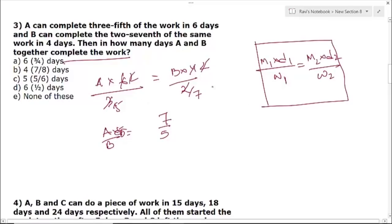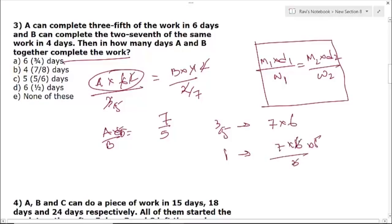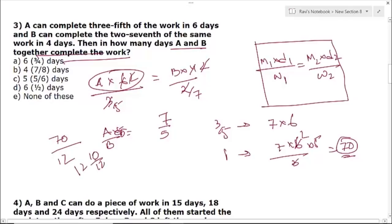Now, A can complete 3/5 of the work in 6 days. Using efficiency of A = 7, total work = 7 × 6 ÷ (3/5) = 70. Combined efficiency of A and B = 7 + 5 = 12. Days together = 70 ÷ 12 = 5 and 5/6 days. The answer is option C.